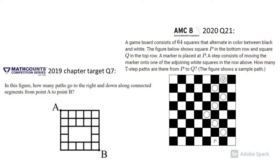The question on the left side is a 2019 Math Counts chapter round target question. It asks the number of pathways from A to B if one can only move to the right or down. The question on the right side is question 21 in this year's AMC-8. It asks: on a chessboard, how many ways can a bishop, which only moves diagonally, move from P to Q?